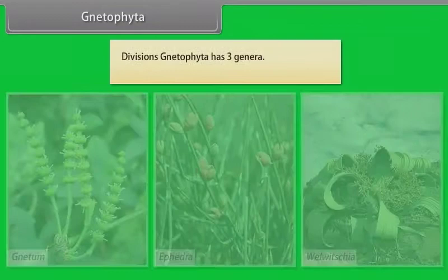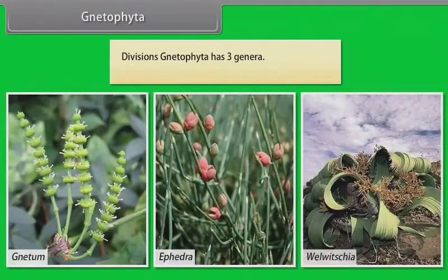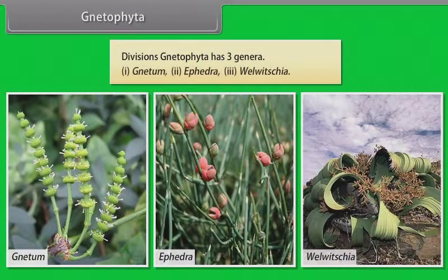Gnetophyta. This division has three genera: Gnetum, Ephedra, and Welwitschia.